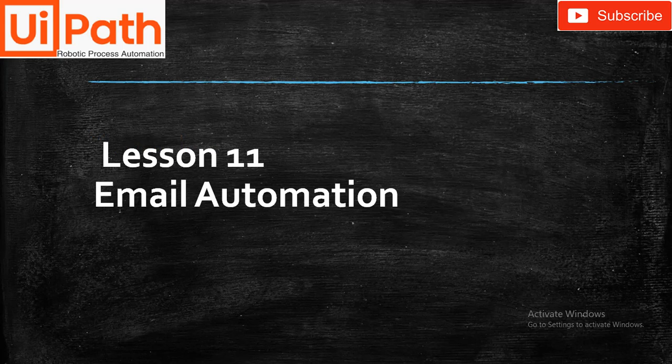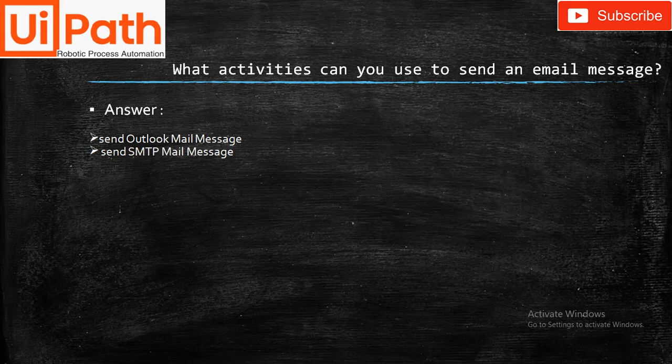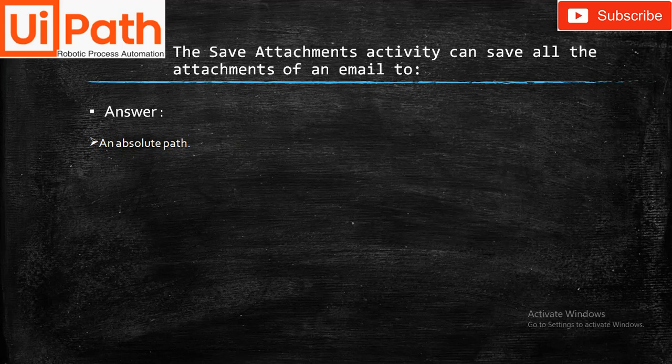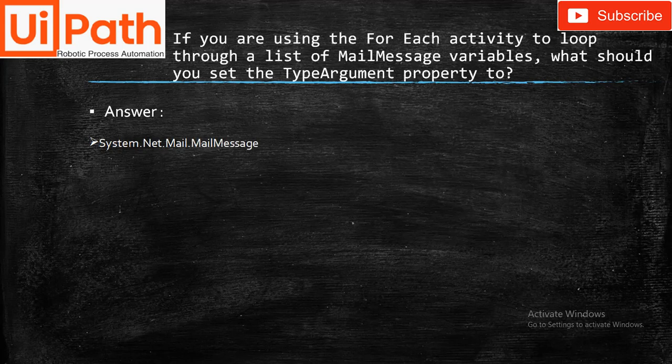The next lesson in the certification program is email automation. What activities can you use to send an email message? Send Outlook Mail Message and Send SMTP Mail Message. The Save Attachment activity can save all attachments of an email to an absolute path. If you use the For Each activity to loop through a list of mail message variables, set the TypeArgument property to System.Net.Mail.MailMessage.